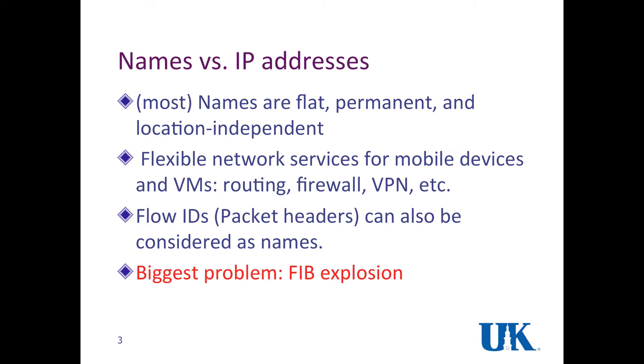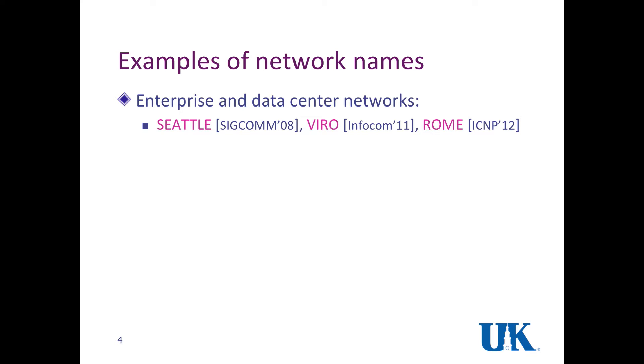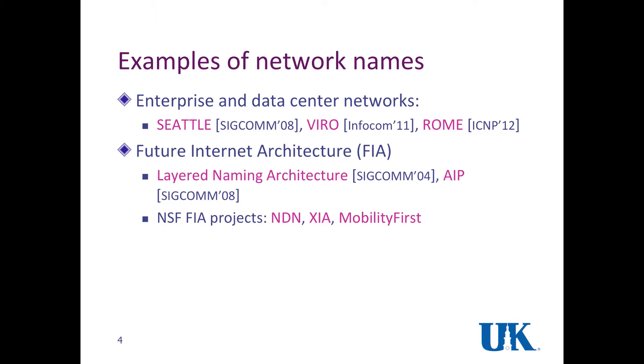However, the biggest problem of using names rather than IP addresses in the FIB is that the FIB can grow to be a very large size, which is called a FIB explosion. This is the problem Gordon just talked about yesterday, the FIB explosion. Examples of NEC1 names have been proposed or already used in enterprise and data center networks. Some of them proposed to use MAC addresses rather than a layer 2 infrastructure to do routing and forwarding. In future internet architectures, a lot of proposals include using name inside and also in LTE.